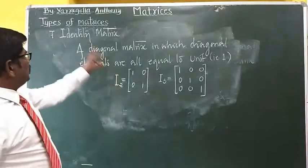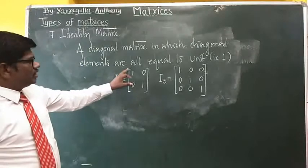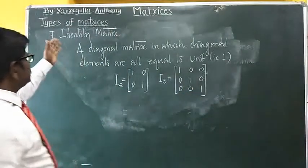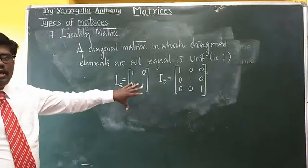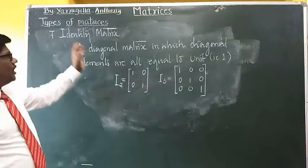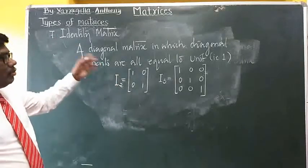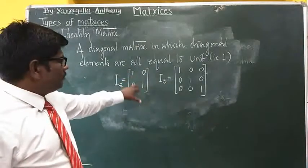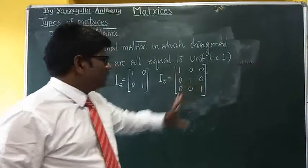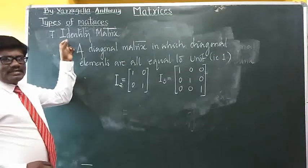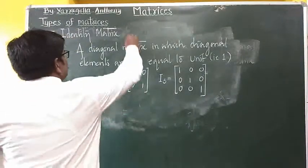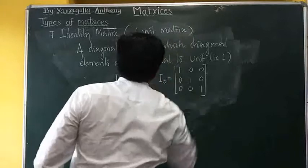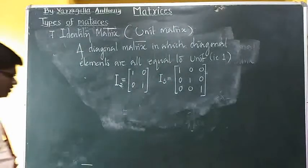In the identity matrix, along the diagonal there is only 1. A scalar matrix has the diagonal elements the same, so an identity matrix can be a scalar matrix, but not all scalar matrices are identity matrices — an identity matrix requires the diagonal elements to all be 1. An identity matrix is also called a unit matrix.